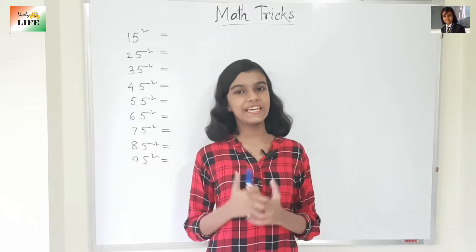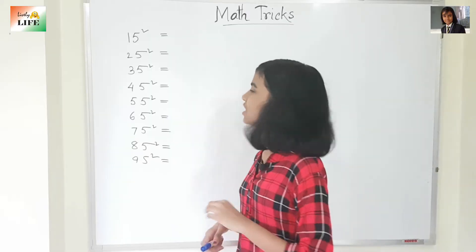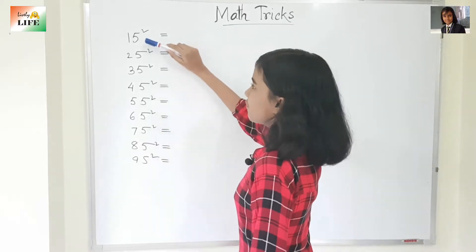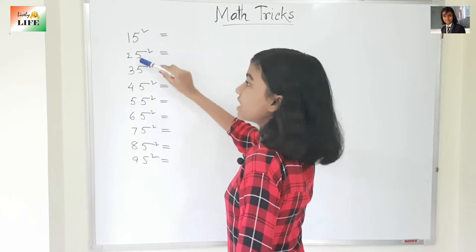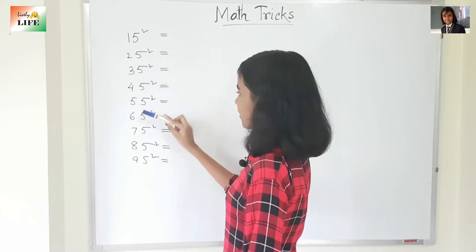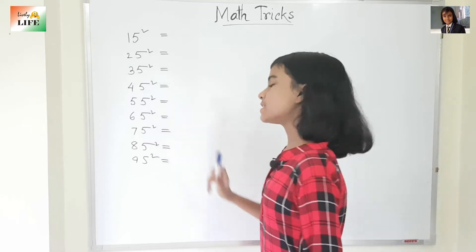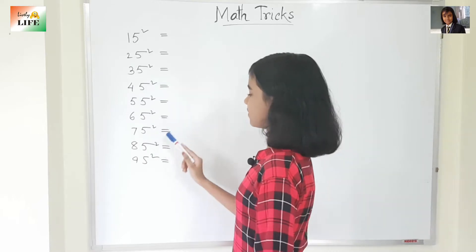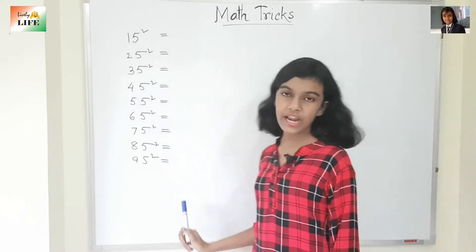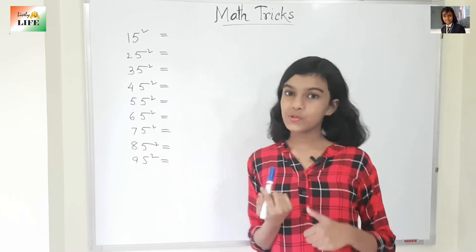Let's begin with the first trick. What is written over here: 15 square, 25 square, 35 square, 45 square, 55 square, 65 square, 75 square, 85 square, and 95 square. So how do you find these out?